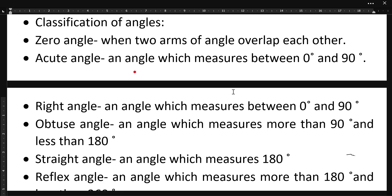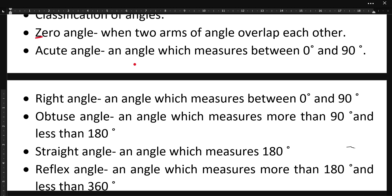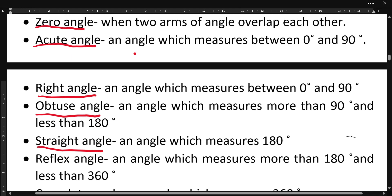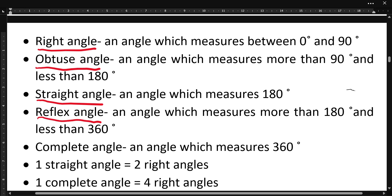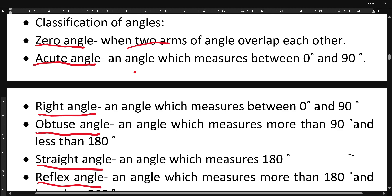Hello, my dear students. This is the third video based on geometrical concepts, and we were talking about angles. In this video, we will learn the classification of angles. Based on the measure of an angle, we can classify angles into seven ways: the first is zero angle, second is acute angle, third is right angle, fourth is obtuse angle, fifth is straight angle, sixth is reflex angle, and seventh is complete angle.